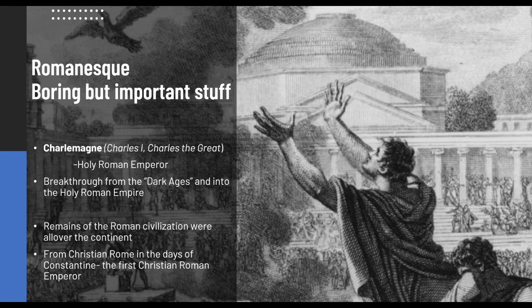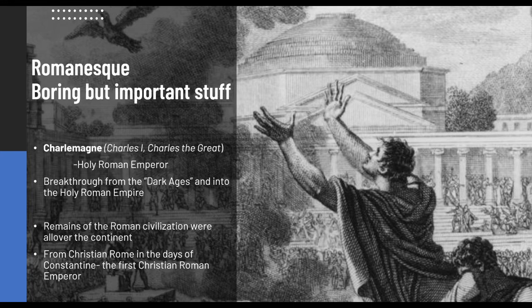The next details are important to understand why Romanesque came about. Charlemagne, or Charles the Great, was crowned Holy Roman Emperor after the Dark Ages. The Dark Ages — also called the Middle Ages — refer to the period after the fall of the Roman Empire. During the Greek and Roman periods, people were very philosophical; they tended to explore and record everything. We have detailed historical records from that time. However, after the fall of the Roman Empire, the passion for recording was lost.